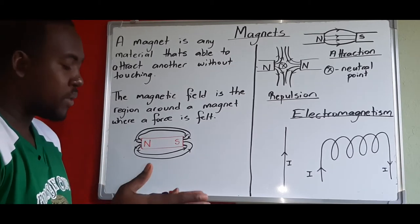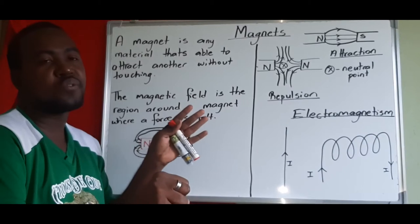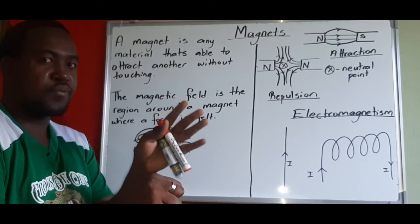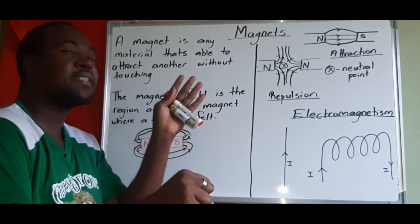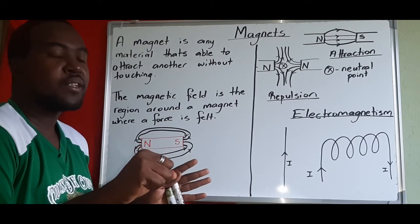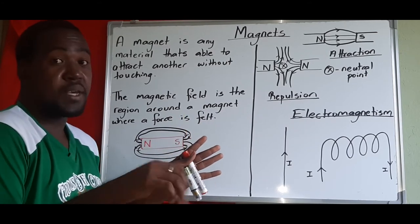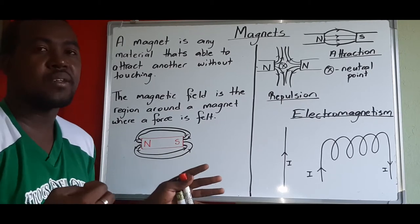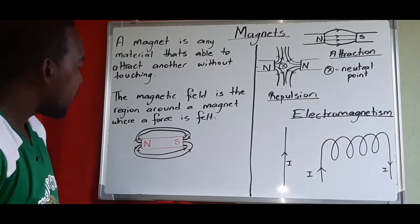Now let's look at the magnetic field. If we put a magnet here and a metal nearby — if the metal is too far from the magnet, there is no force being felt. But the closer you get, there is an attractive force. That's because we're inside the magnetic field, which is a region around the magnet where you feel a force. Once outside that region, no force is felt.